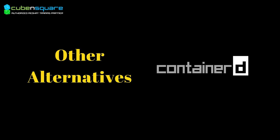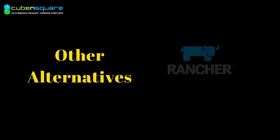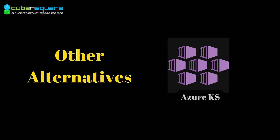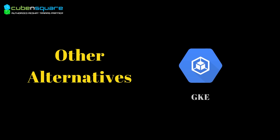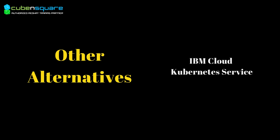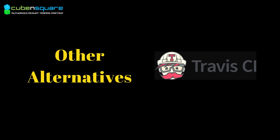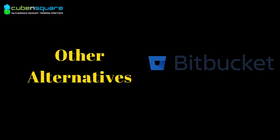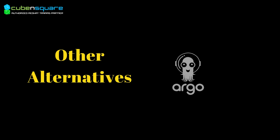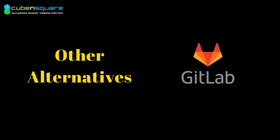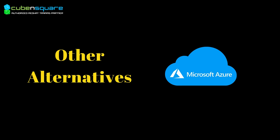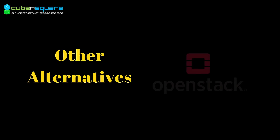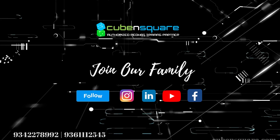Other alternative tools include Podman, Cryo, Containerd, Apache Mesos, Rancher, Amazon EKS, Azure Kubernetes Service, GKE (Google Kubernetes Engine), IBM Cloud Kubernetes Service, Red Hat OpenShift, Travis CI, Spinnaker, Bitbucket, TeamCity, Rundeck, Argo, Chef, Puppet, GitLab, AWS Cloud, Azure Cloud, Google Cloud, and Red Hat OpenStack.